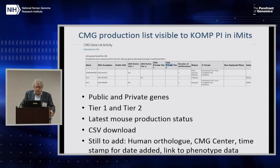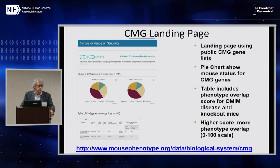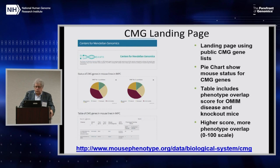The CMG production list is visible to COMP PIs on IMITS, including both public and private genes — private genes being ones where the submitter hasn't yet allowed posting. Both Tier 1 and Tier 2 genes are listed along with where those genes stand in the mouse pipeline, and other features are being added to make this platform quite valuable going forward. There's also a CMG landing page showing the status for CMG genes, including an interesting table at the bottom showing a phenotype overlap score between the OMIM clinical features and the features in the knockout mouse.